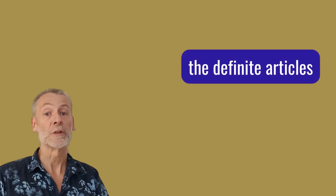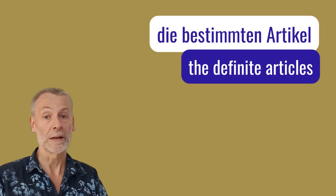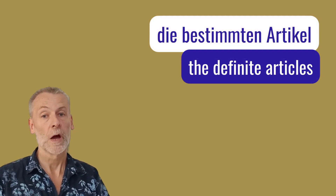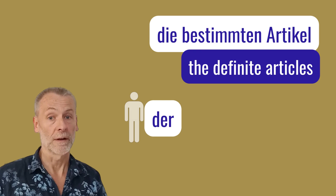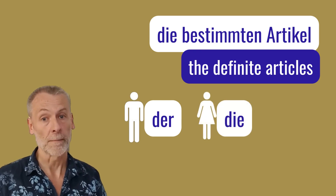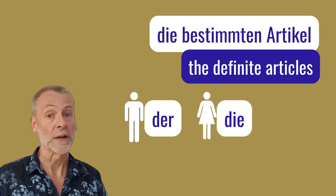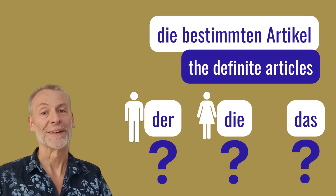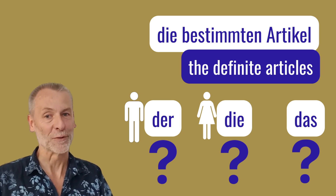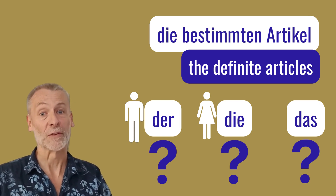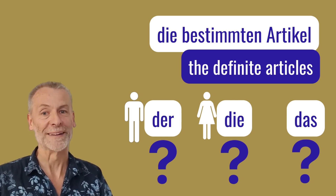Why are the definite articles — die bestimmten Artikel — so difficult for us? Well, there is natural gender, like male and female, that's okay. But with the rest, there is not so much logic behind it. But as I said, there is good news for you, and it's starting right now.